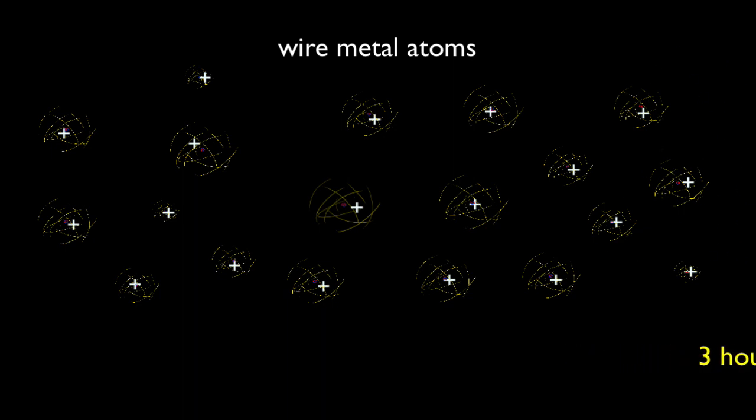The actual speed of electrons bouncing within the metal is in fact much greater. Only a tiny component of the electron's velocity, however, is directed along the circuit. We refer to this as drift speed.